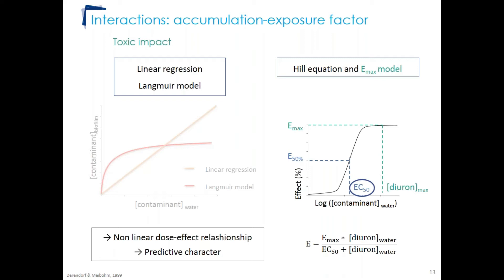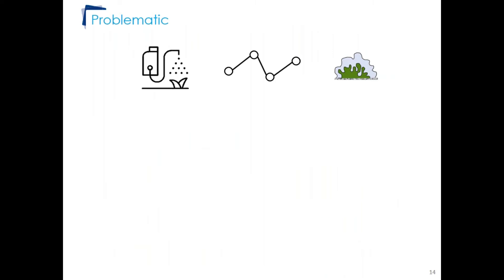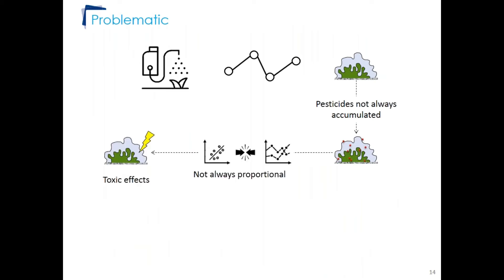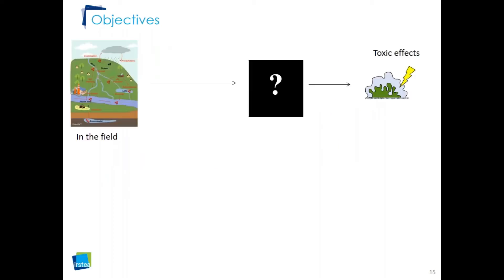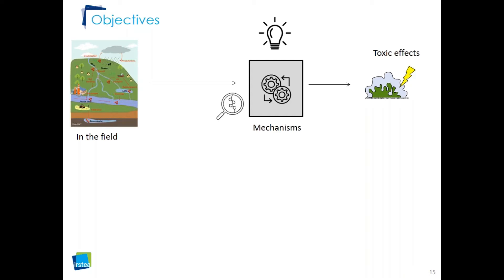Pesticides are widely spread in the aquatic environment and can be accumulated by biofilms, but not systematically. We also know that toxic effects are not always proportional to pesticide bioaccumulation. We are able to quantify pesticides in the aquatic environment and measure the toxic effect on biofilm, but we don't know what happens between these two stages.